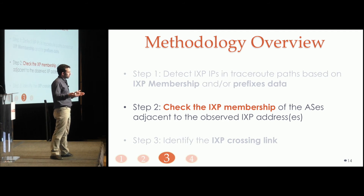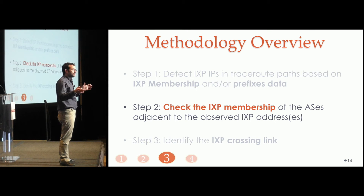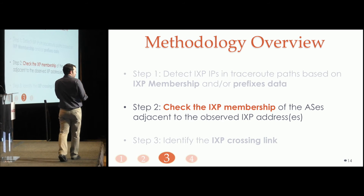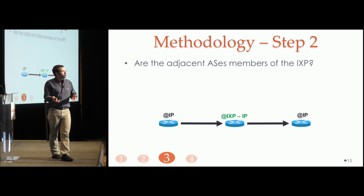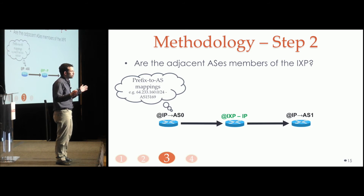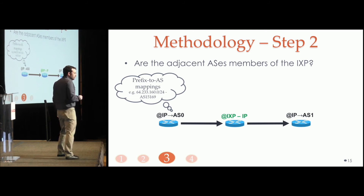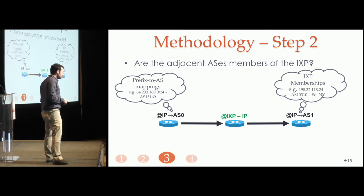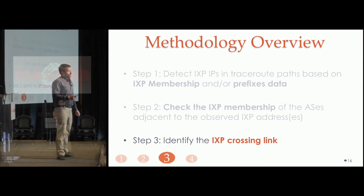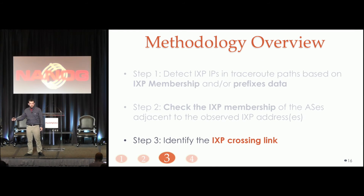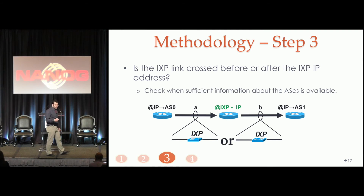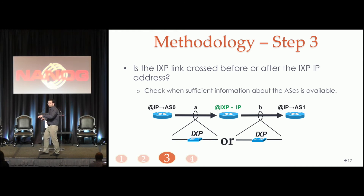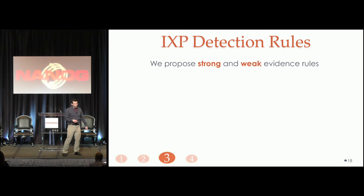In the second step, we translate the IP path to an AS path and check if the ASes adjacent to the IXP IP are also members of that IXP. Having the hop window, we map the border IPs to AS numbers based on prefix-to-AS mappings, and then check if these ASes are members of the candidate IXP in the middle, using the IXP membership data. In the third step, we take the final decision: gathering all information from the previous steps, we determine if and at which hop in the Traceroute path we have an IXP crossing.